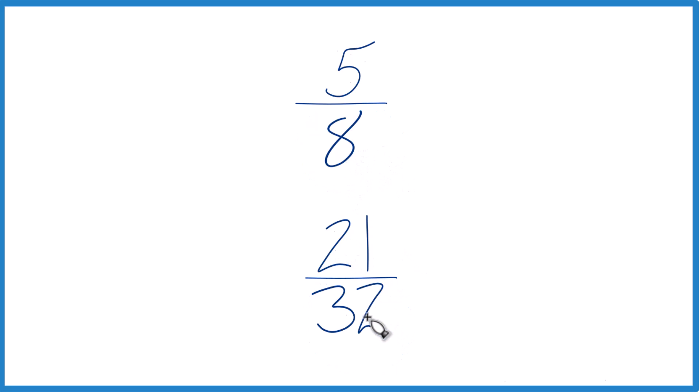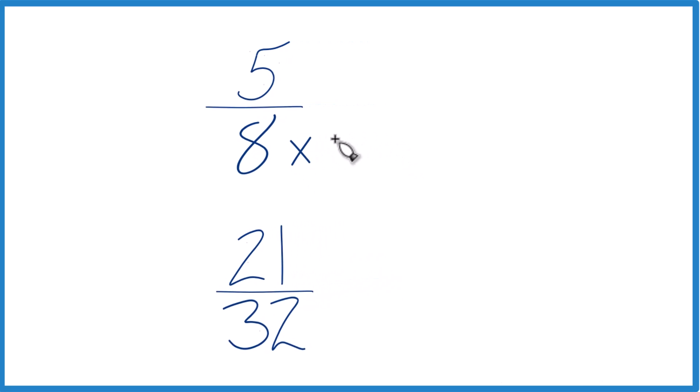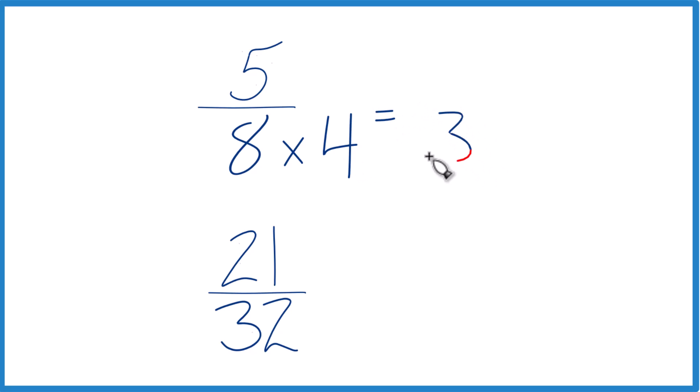Let's do that. So 8 times 4 is 32. So let's just do 8 times 4, and that'll give us 32. And then down here we already have 32, so let's just keep that the same, 21/32.